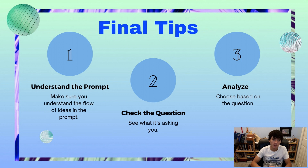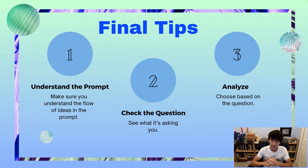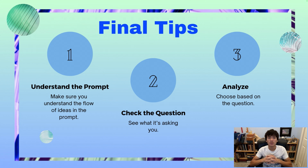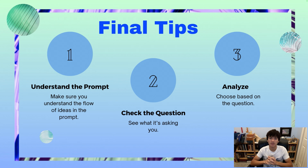Final tips to wrap this up. First, make sure you understand the prompt and the flow of the ideas. Then check the question — see what it's asking. And third, analyze: choose based on the question, and make sure what you're choosing is definitely in the text. There shouldn't be any ambiguity at all. If you analyze the text properly, you should be able to figure out the correct answer with relative ease. Thank you for watching this video. Good luck on your SATs, and please subscribe — it helps me make more of these free videos for you all. Have a good rest of your day.